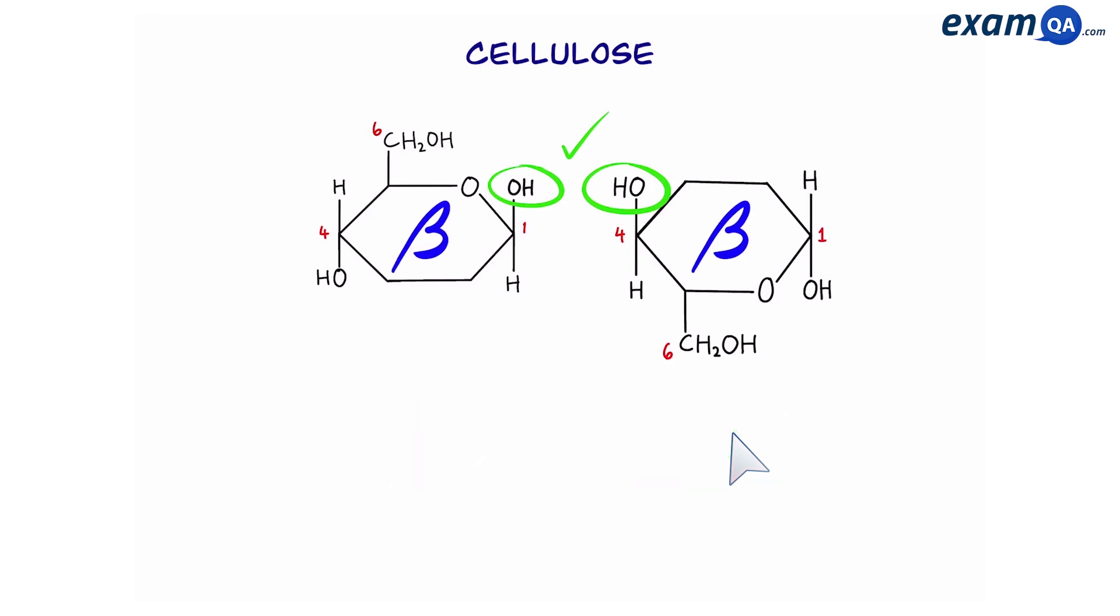Okay, so let's continue now with our cellulose formation. So there we go. We formed a 1,4 glycosidic bond. Yes, even though the second beta glucose has been inverted, it's still a 1,4 glycosidic bond. And cellulose only has 1,4 glycosidic bonds, nothing else.